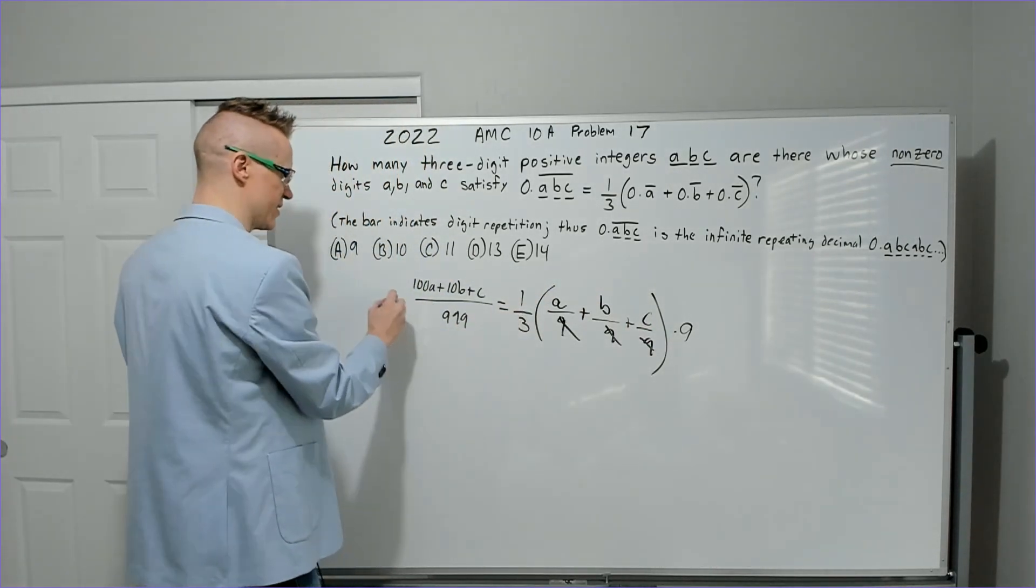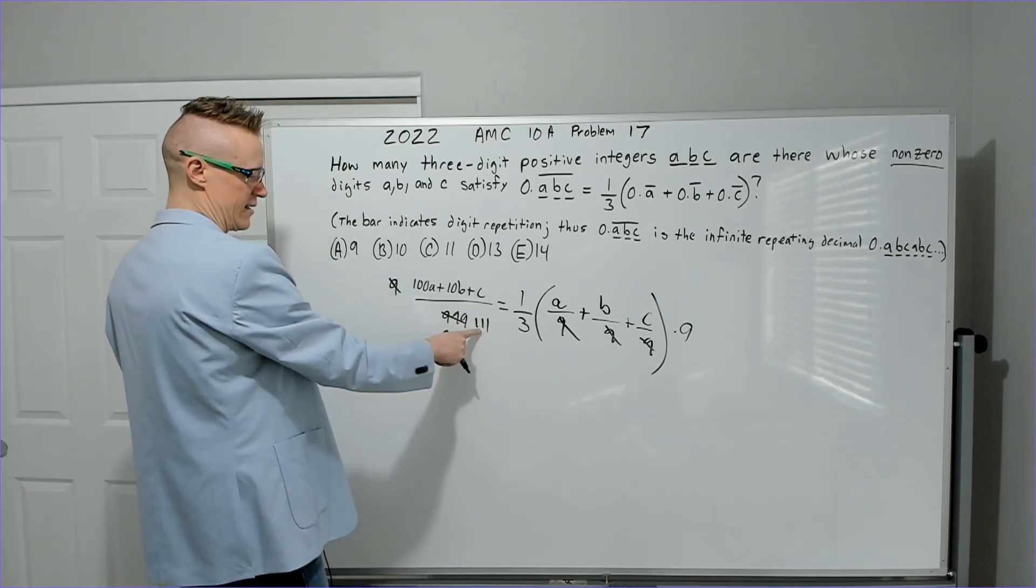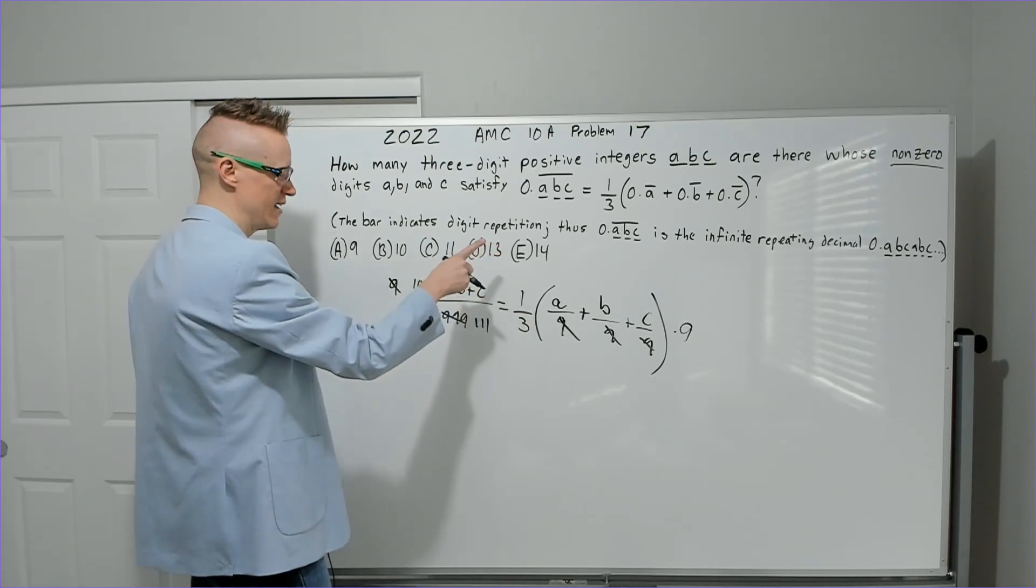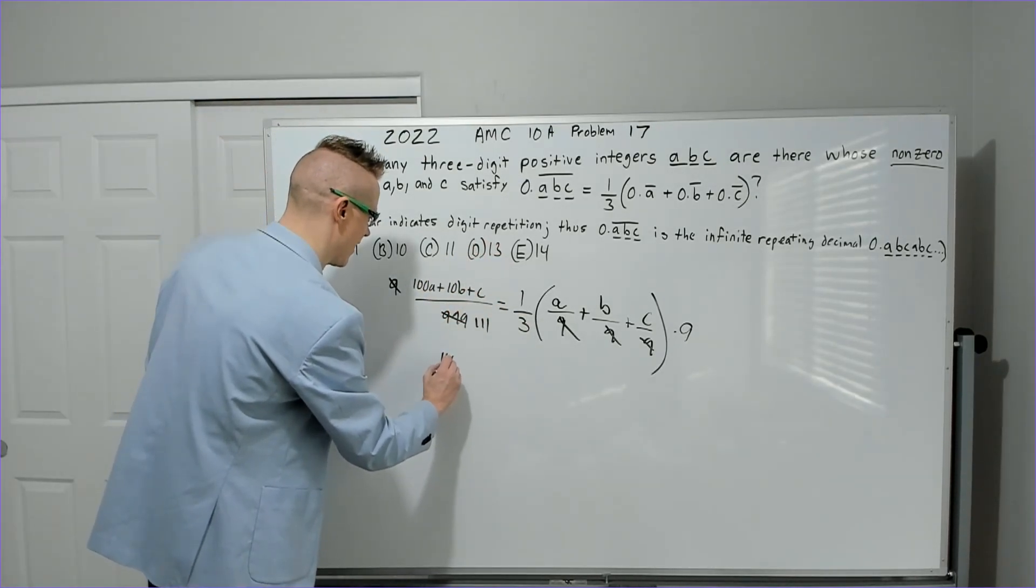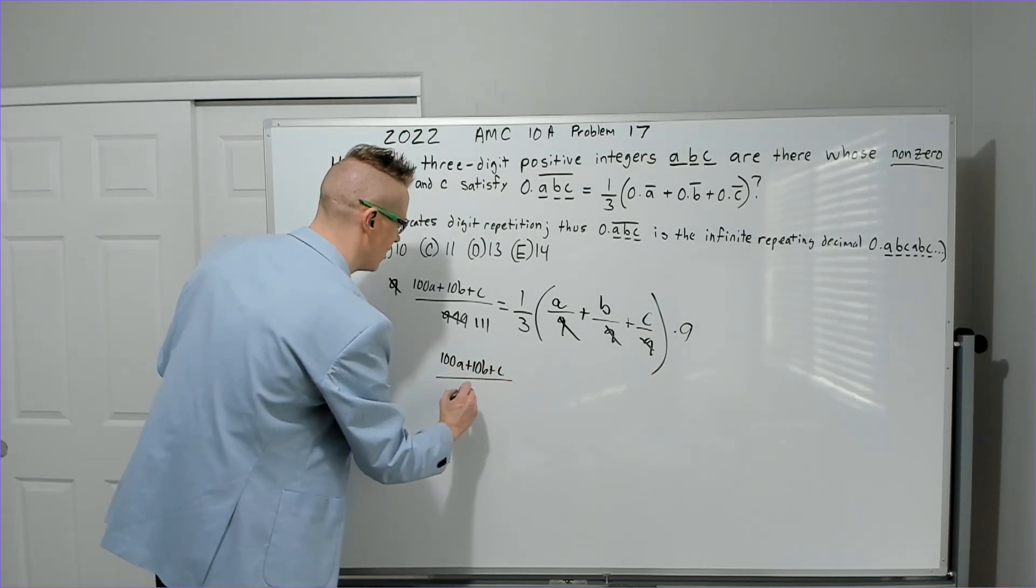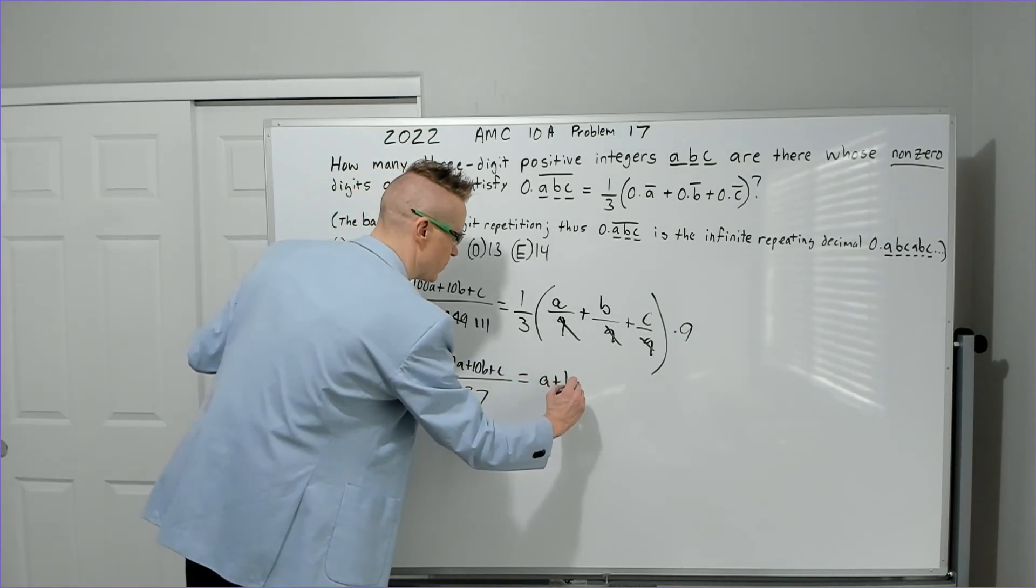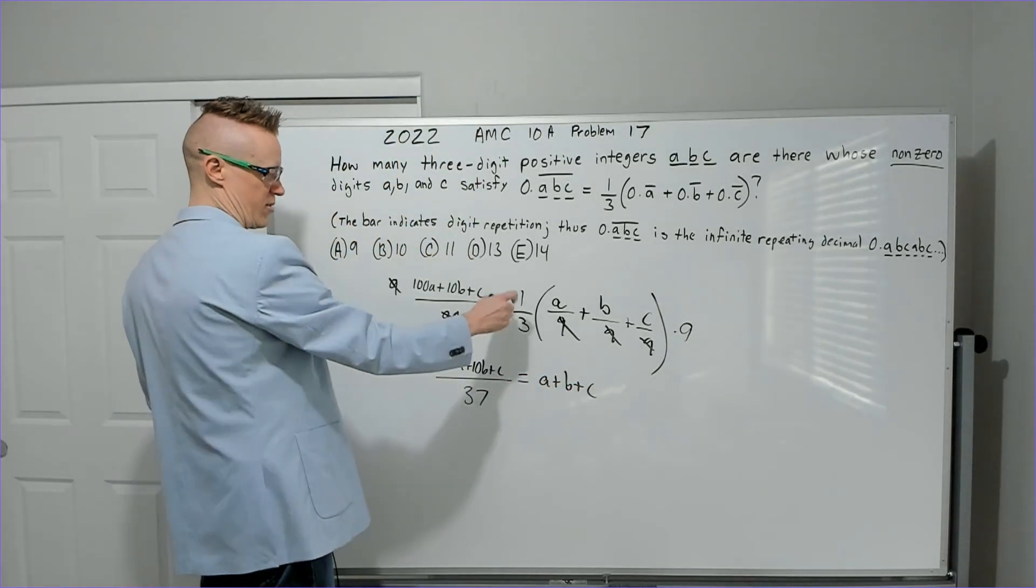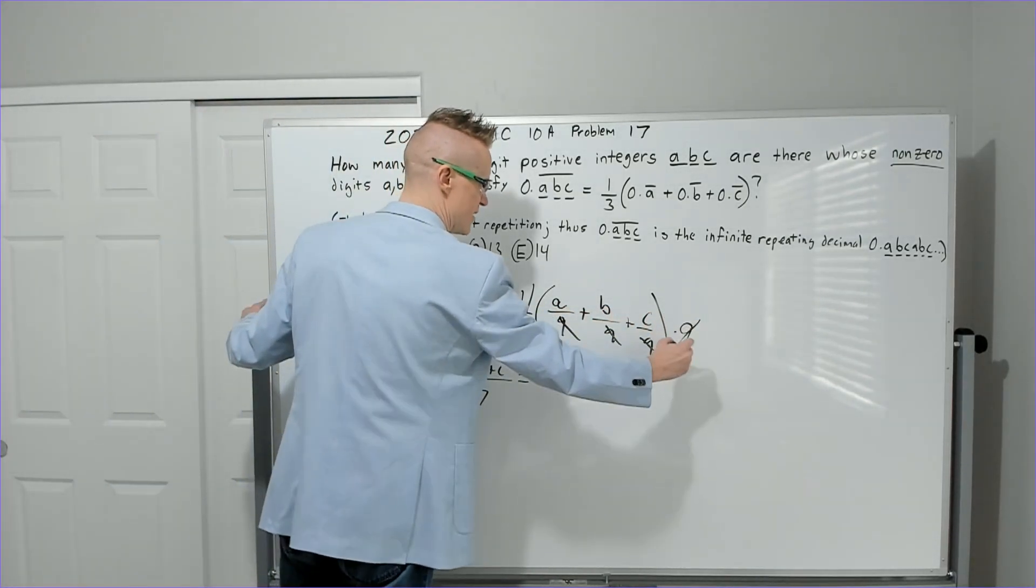We'll cancel and get 111. I recognize 111 as divisible by 3. I will multiply by 3. You're now going to have 100A plus 10B plus C over 37 equals A plus B plus C, because the 3 is gone.